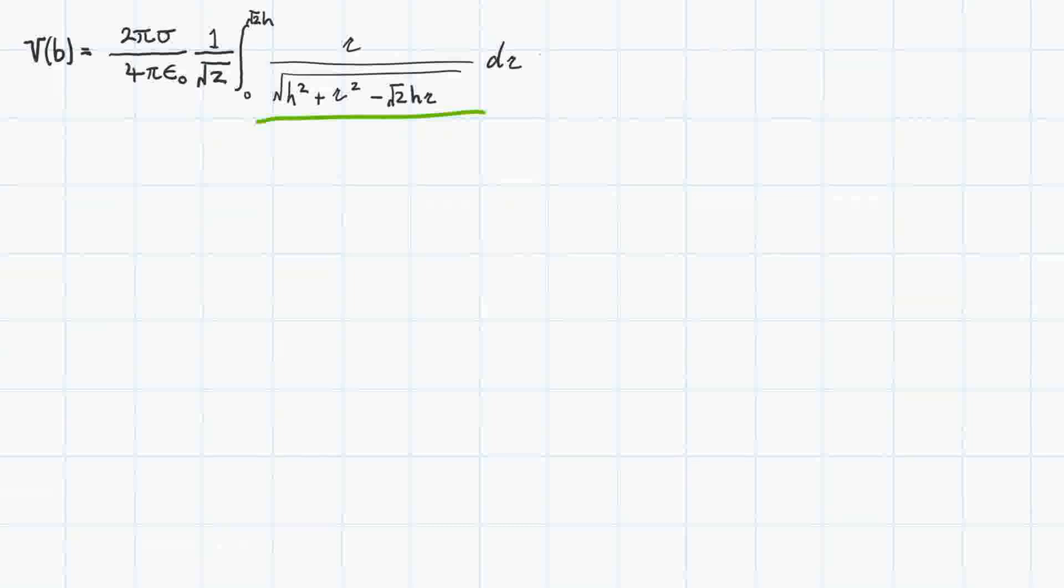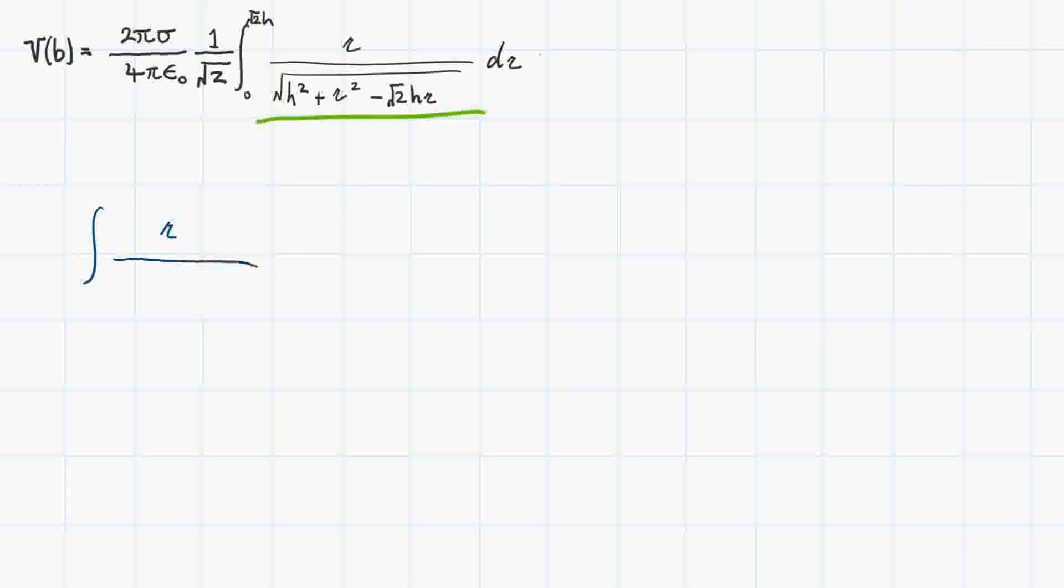Let's write the indefinite integral out on its own: the integral of r over h squared plus r squared minus square root of 2hr. That's the integral we want to evaluate.